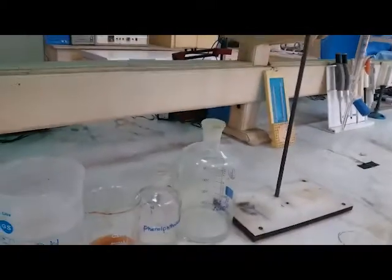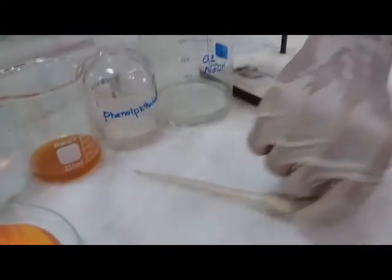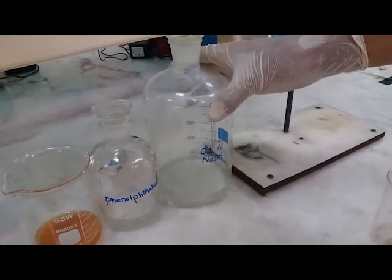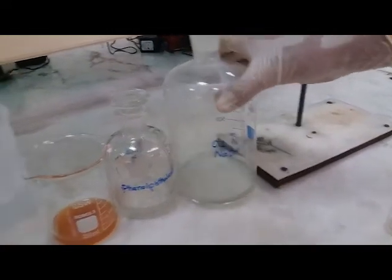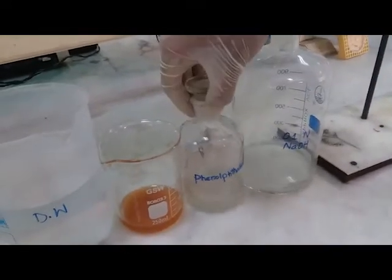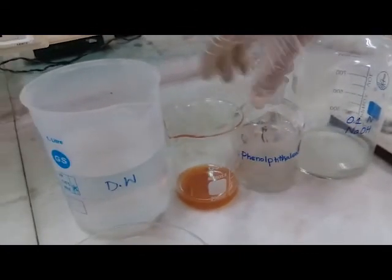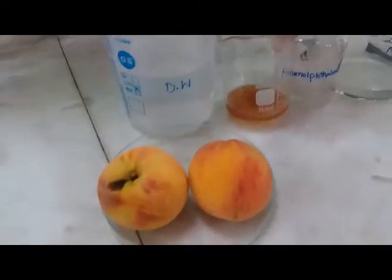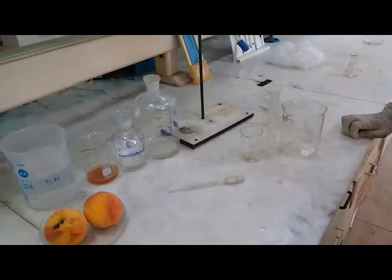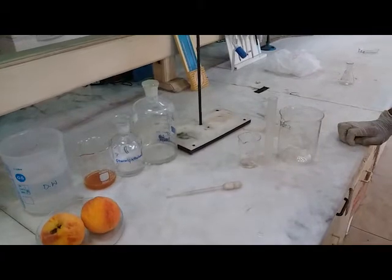We will be needing a dropper. In the chemicals, we will need 0.1 normal NaOH, phenolphthalein as an indicator, the fruit juice—we are using the juice of peach—and distilled or double distilled water. These were the chemicals and apparatus that we will be going to use for this practical.